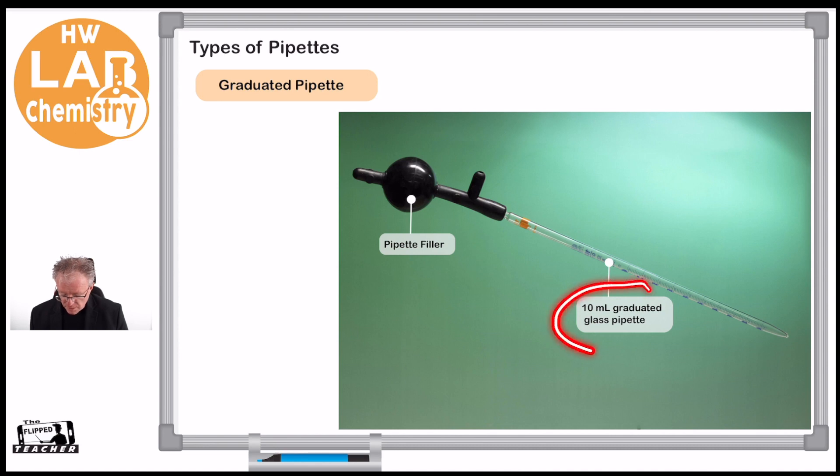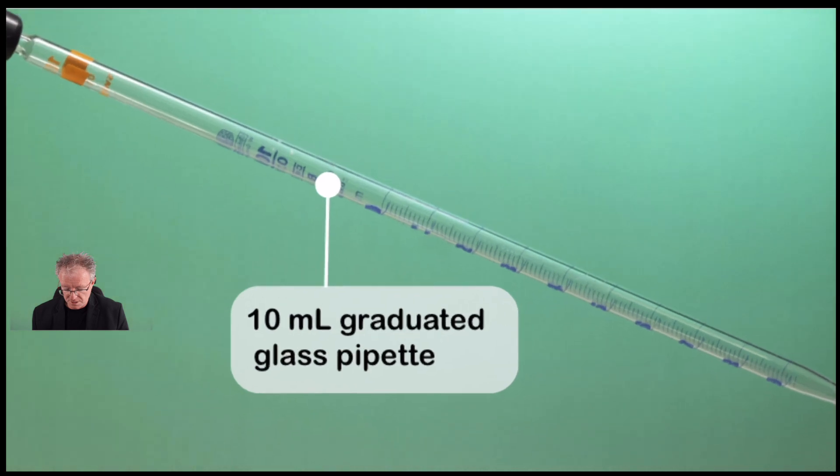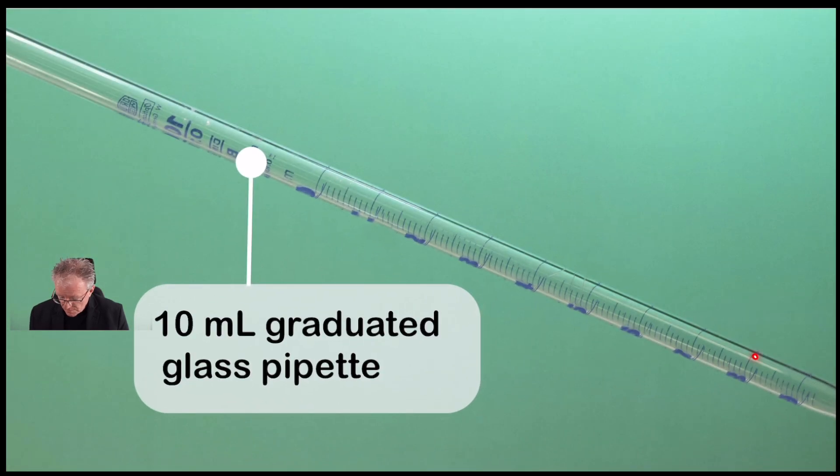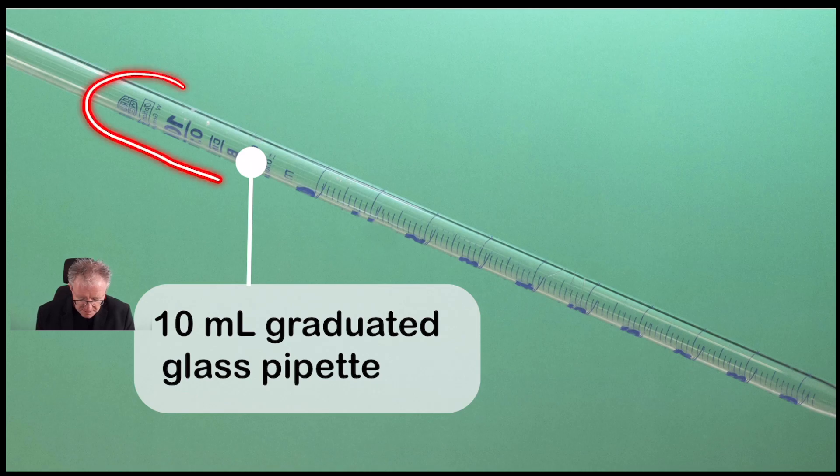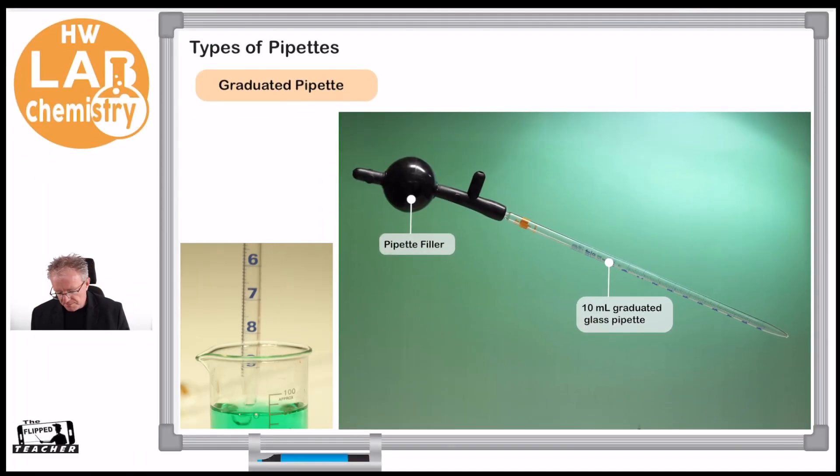So here we have the graduated pipette. The graduated pipette has graduations—let me just enlarge that. You can see we've got volume graduation marks. We've still got the details at the top which tell us about the volume. This one's a 10 milliliter pipette, but these aren't as accurate as our volumetric pipette.